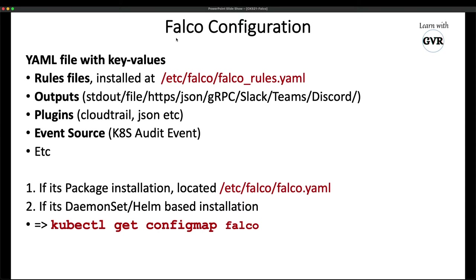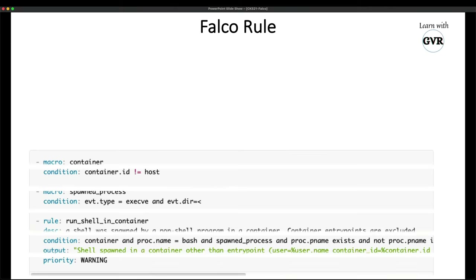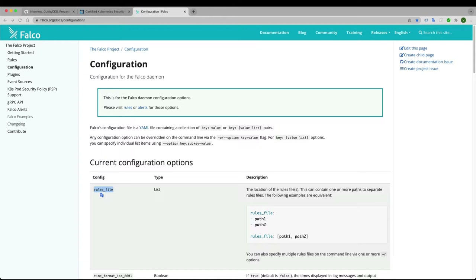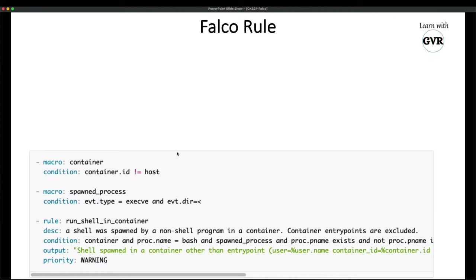If you install via DaemonSet, check the configuration using 'kubectl get configmap falco'. This ConfigMap will have all the Falco configuration. Falco rules are the most important part — you can find examples in the official documentation.